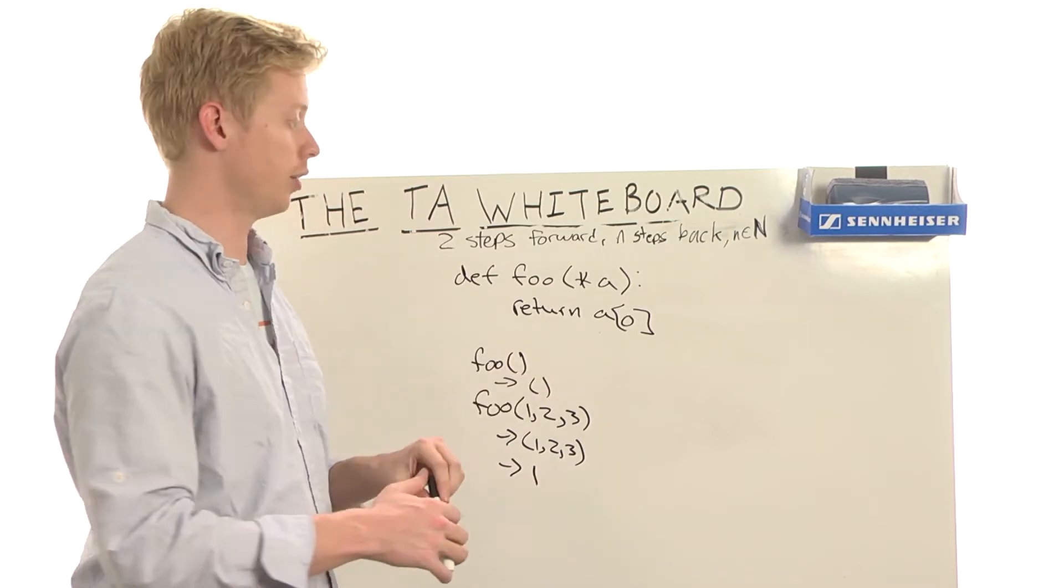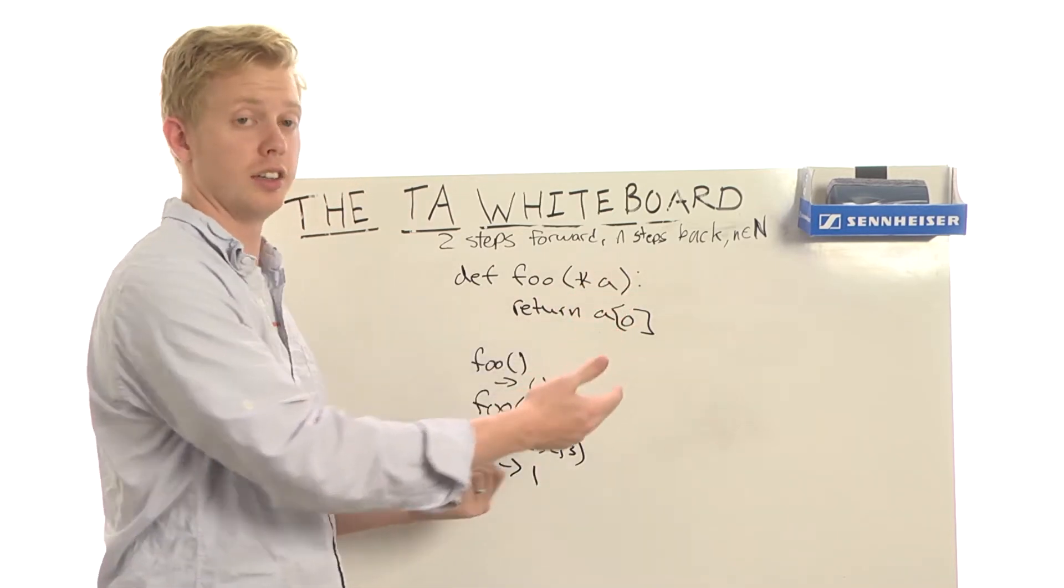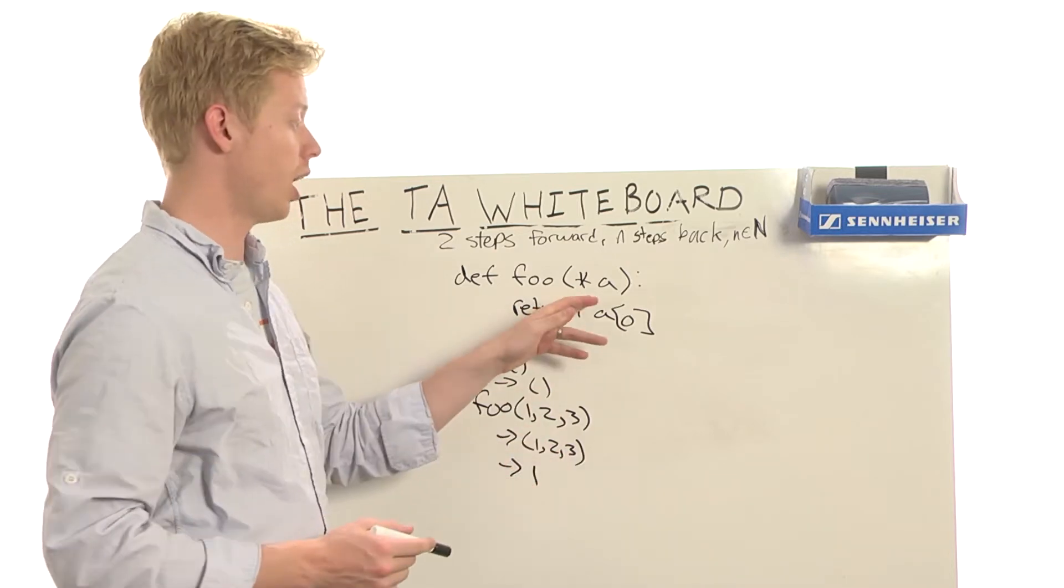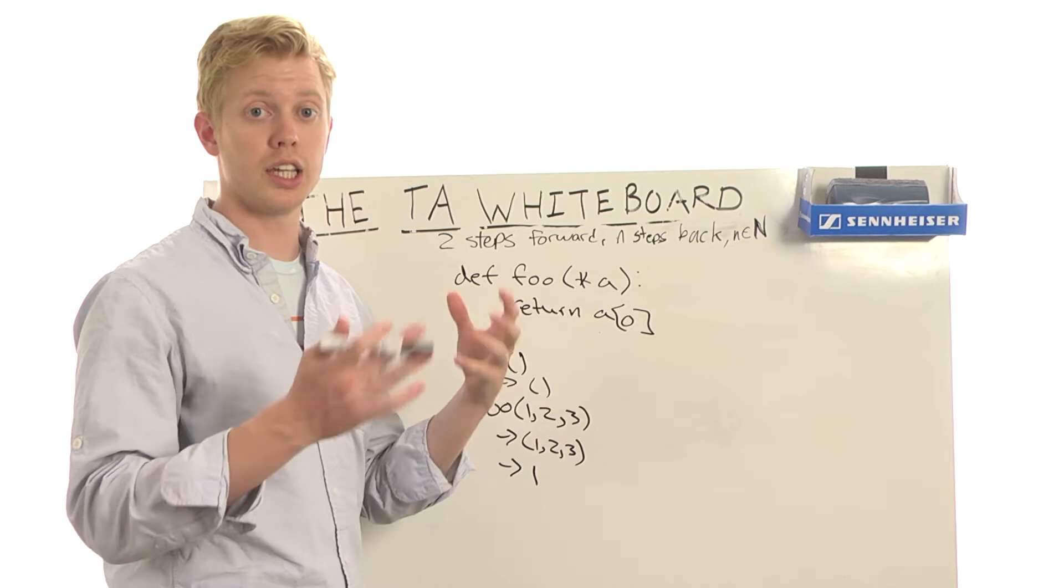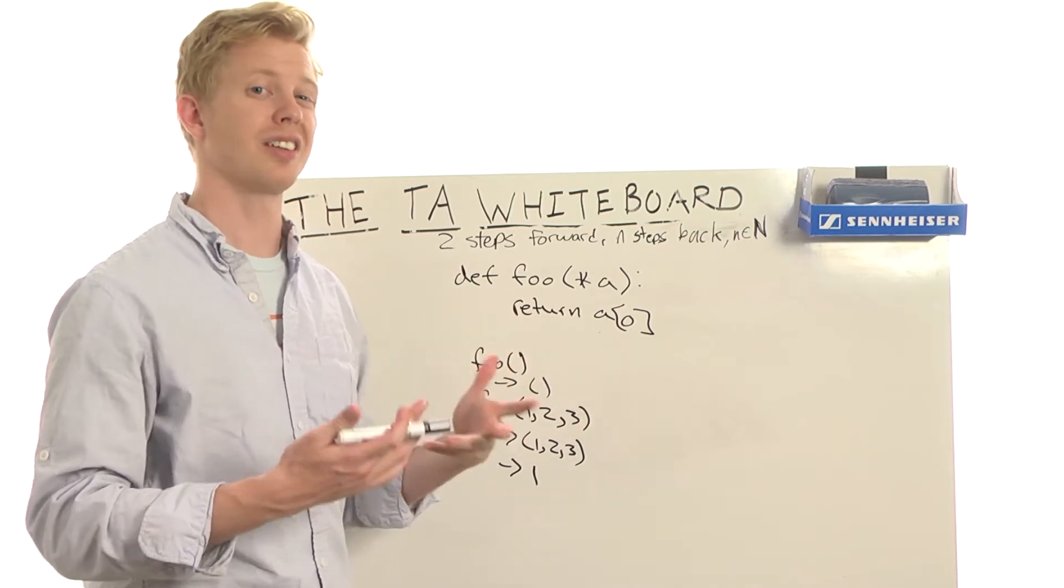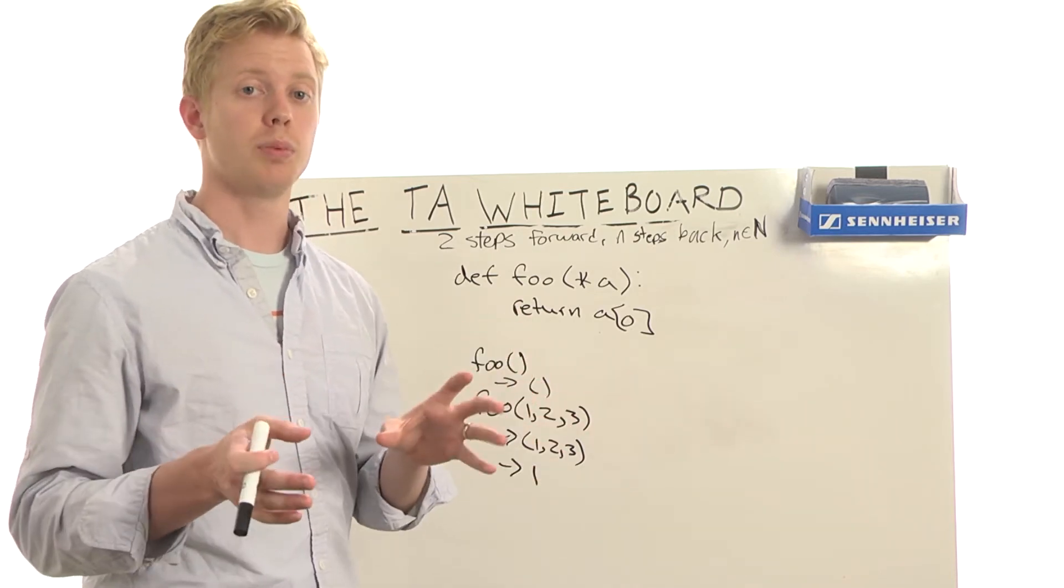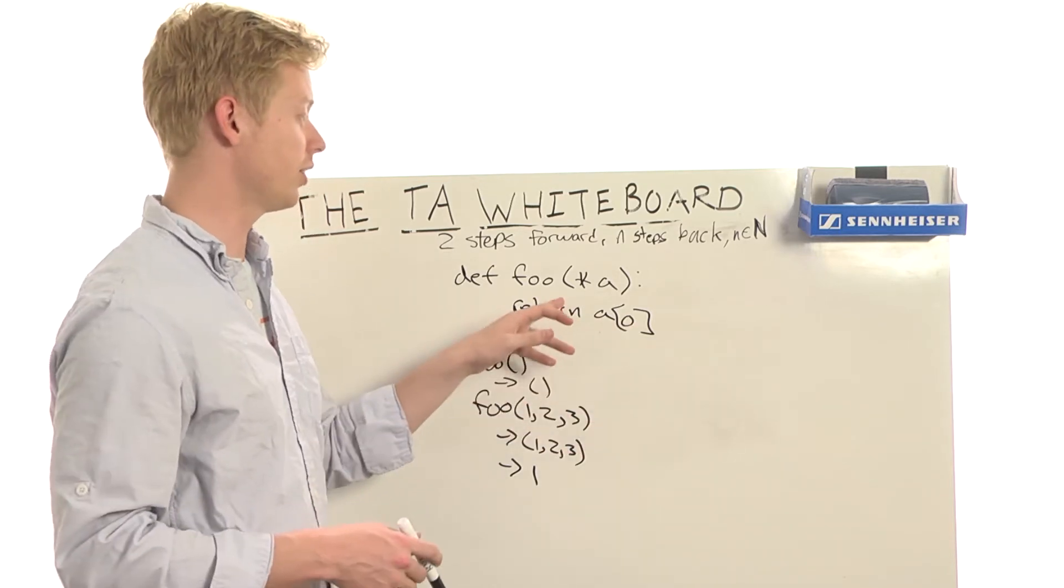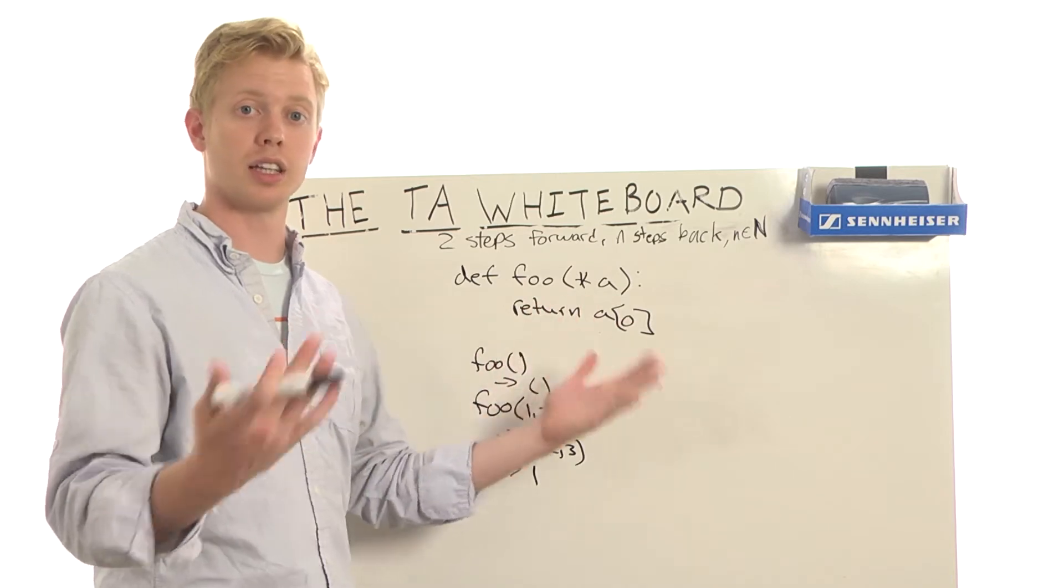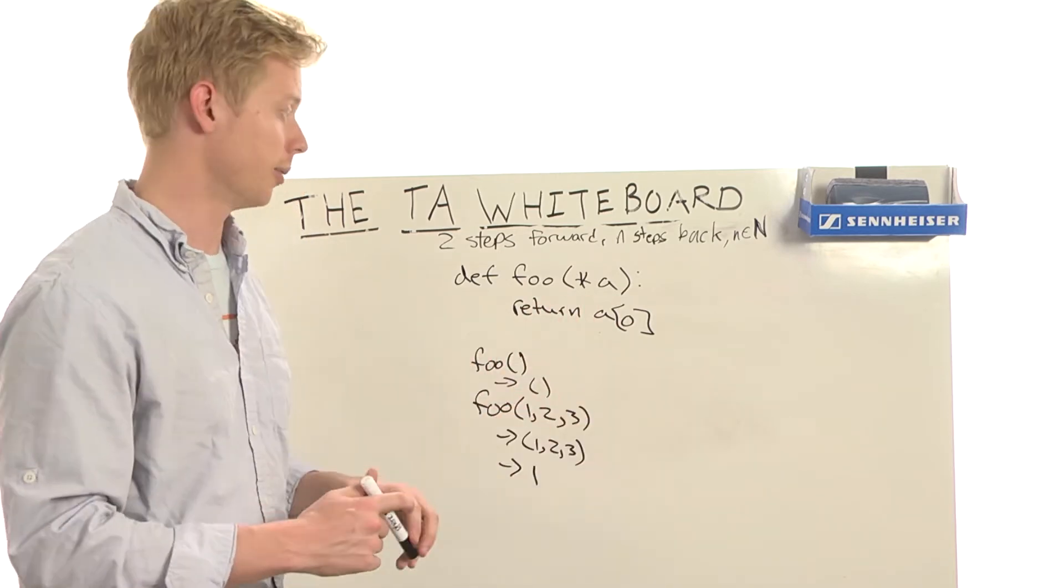And so this is a handy way of making a function that can take any number of arguments. Now, I used this in class in Unit 3 when we were pulling a link out of the database, when we were pulling a link out of that SQLite database in the IDE. What you get when you pull something out of the database is just a tuple of all of the columns. And I can pass that tuple into the link constructor to make a link object. And so that's what I was doing there.